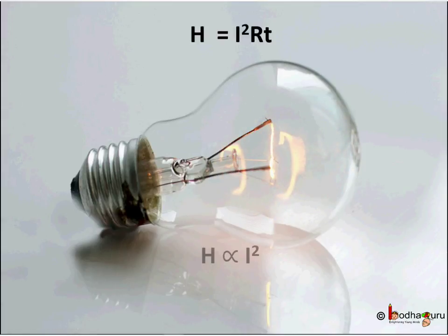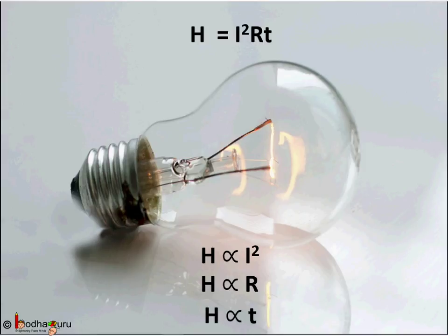The famous scientist Joule also supported this equation. He said heat produced in a resistor is directly proportional to the square of current flowing through it, is directly proportional to resistance for the given conductor, and is directly proportional to time for which the current flows, assuming resistance is unchanged. So if we combine these three proportions we get heat equal to I square RT.